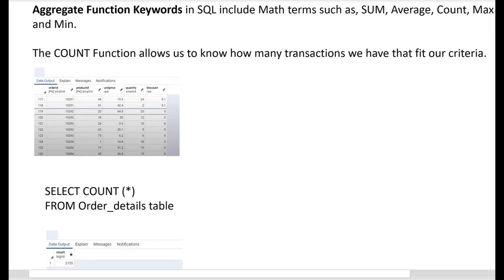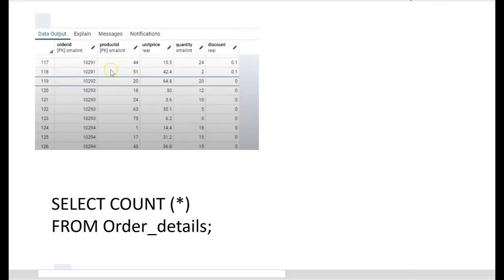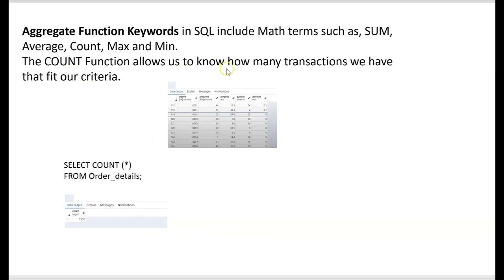Let's start with the COUNT function. The COUNT function allows us to know how many transactions we have that fit our criteria. So let's say this is our order details table — customers have placed orders and here they all are. We can scroll down past order number 126 because there are thousands of orders in a typical database. After SELECT, we put in the aggregate function COUNT, and we find out there were 2,155 total transactions.